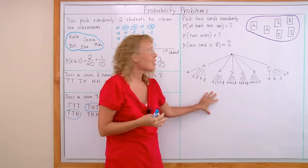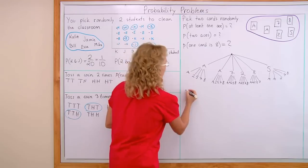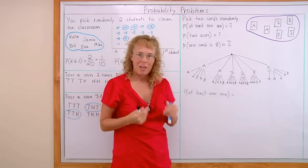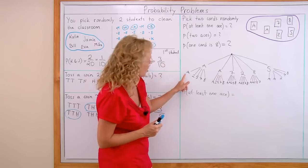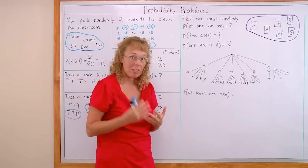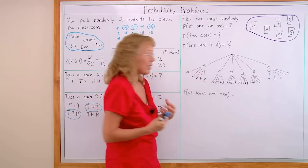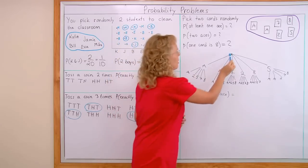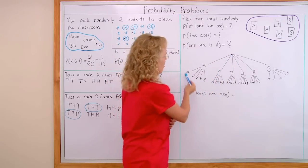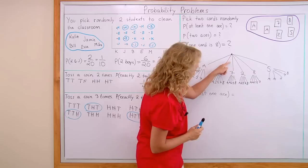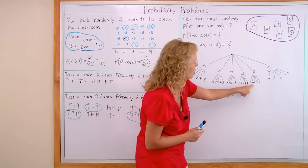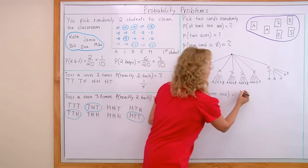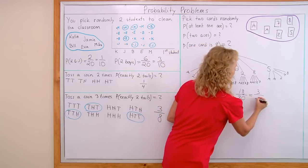Now we can use this tree diagram to solve each problem. What's the probability of at least 1 ace? We count all favorable outcomes. If I pick ace first, all 5 of those second-card outcomes have at least 1 ace. Same for the second ace branch — that's 10 favorable outcomes from those two branches. Then from the remaining branches (7, 2, 8, 5), each contributes 2 more (picking an ace second), giving 8 more. So 18 favorable outcomes over 30, which simplifies to 3 fifths.